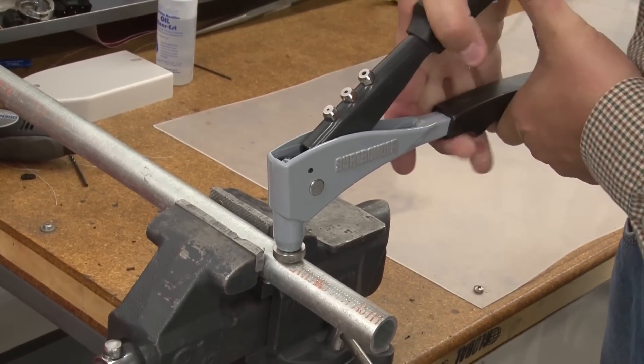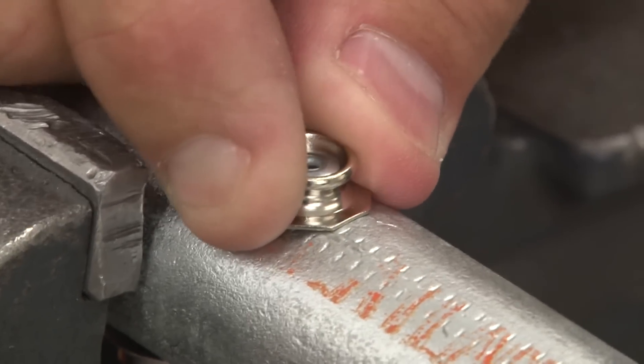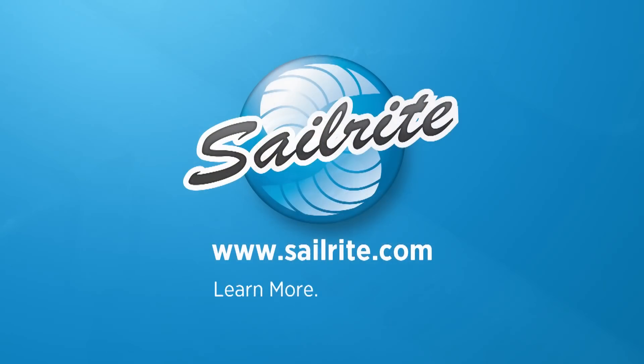This die is made in the USA. Order the Snap-Rite surface mount stud die at www.Sailrite.com. It's your loyal patronage to Sailrite that makes these free videos possible. Thanks for your support.